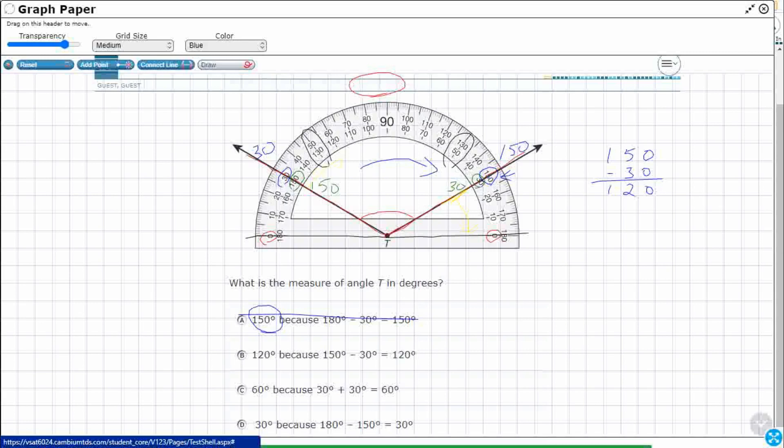B. 120, because 150 minus 30 is 120. That's exactly what we did. So this is going to be, if A is incorrect, B is correct, at least I think so. We've got to check C and D first.